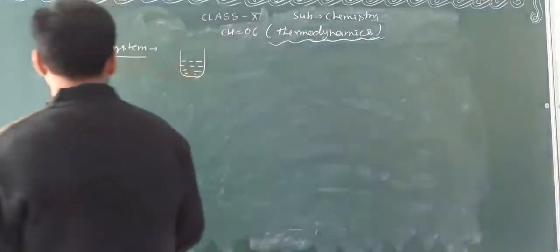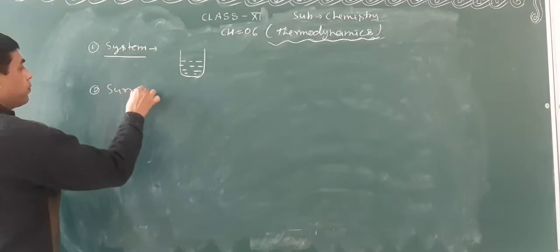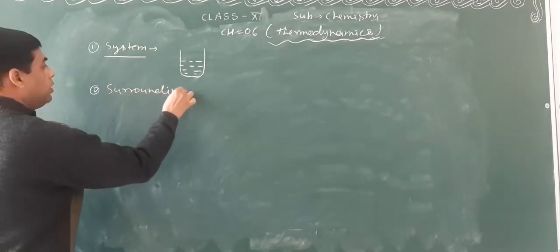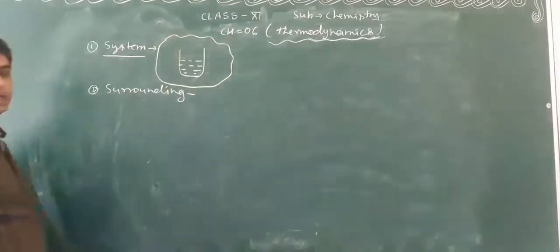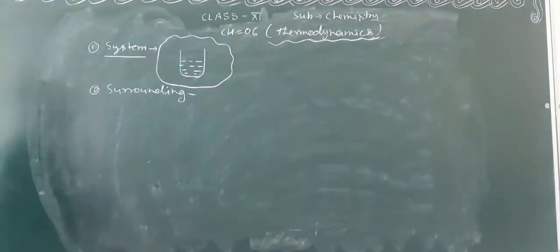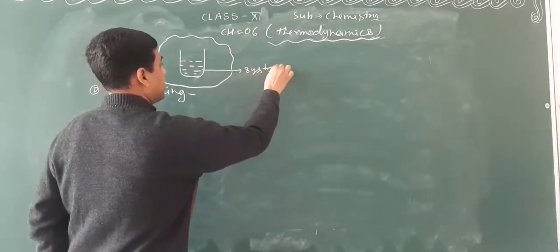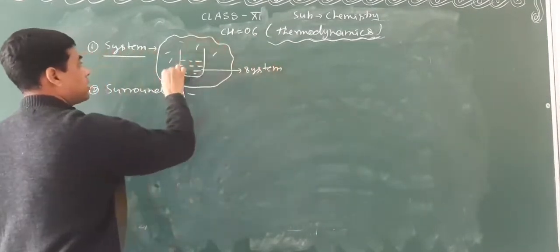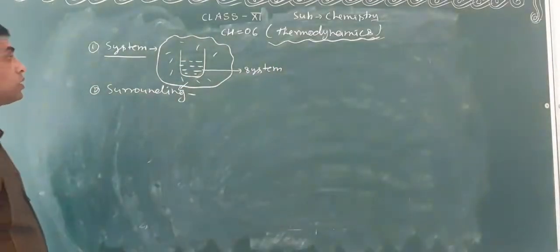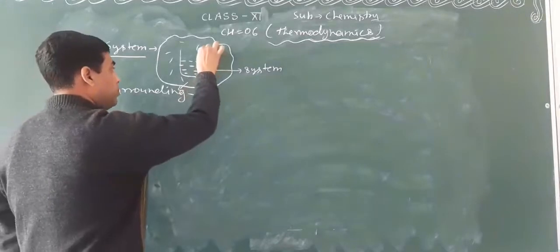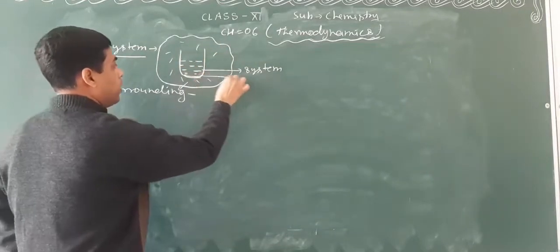Now the next thing comes to the surrounding. What is the surrounding? The surrounding is the area around the system that is affected by or affects the system.